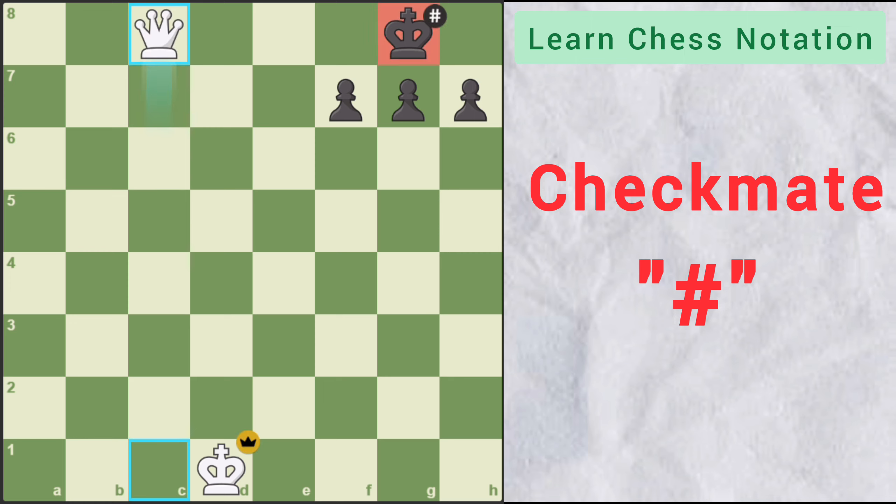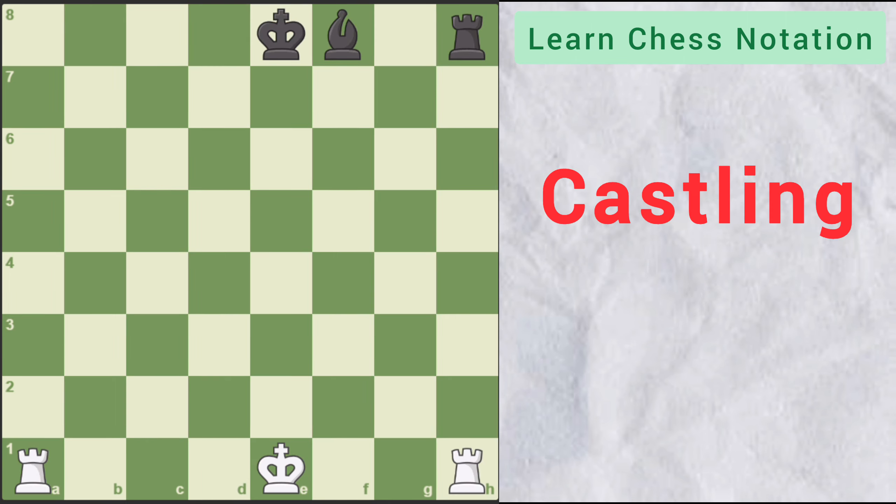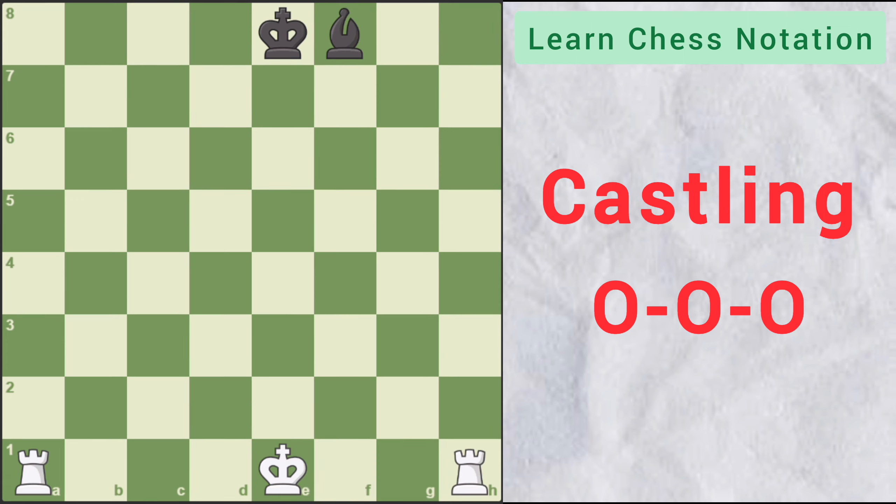For checkmate, a symbol like hashtag is used. If this queen moves to C8 square, then it will be a checkmate and it will be written as capital Q for queen followed by the name of square and at last a hashtag symbol which denotes a checkmate. The next one is castling which is represented by special notation for king side and queen side.